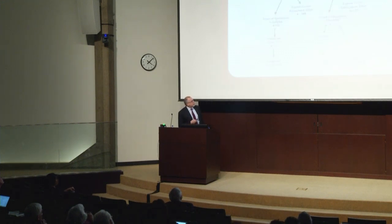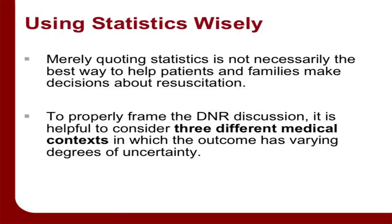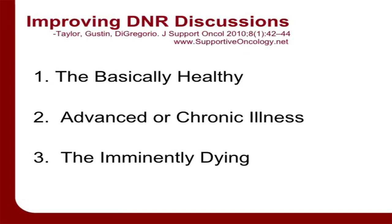This is an important number — these numbers are strikingly different: 0% versus 20%. But somehow these statistics don't help us in general, and I'm going to talk about why that is and what an alternative approach is. This paper was published in Supportive Oncology. Myself, a colleague who's a palliative care physician, Jillian Guston, and Dr. Wells Gregorio, a psychologist in our palliative care program, came up with this paradigm of trying to categorize people into three groups: the basically healthy, advanced or chronic illness, and the imminently dying.